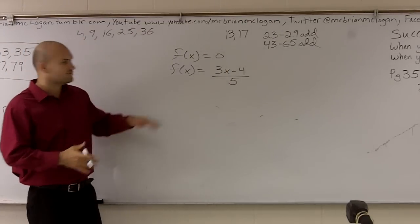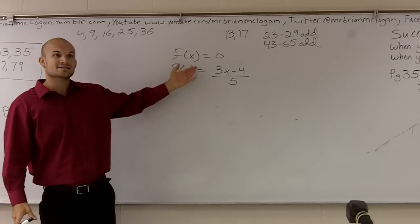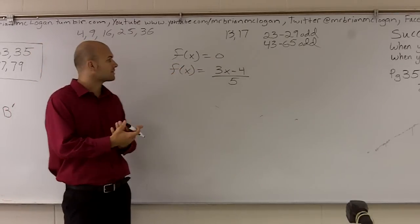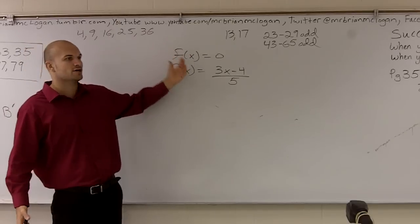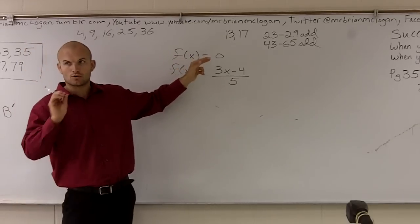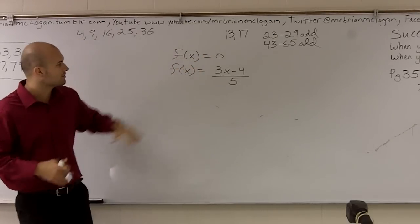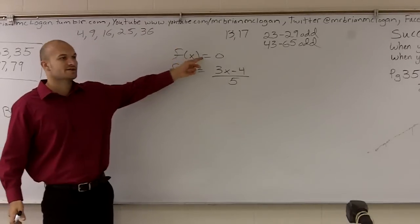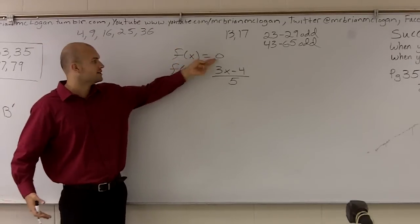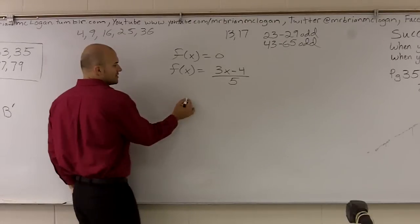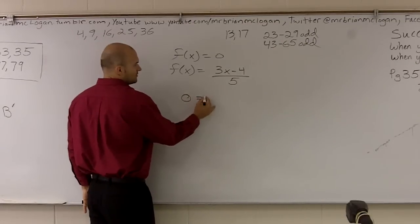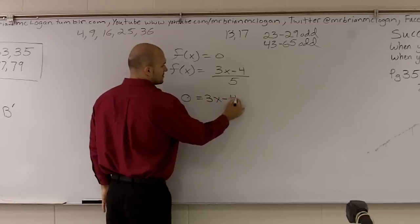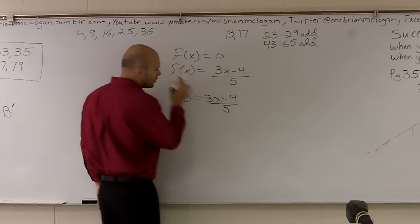Previously, we've learned to find the value of the function when x equals 0. Now what we're going to do is find the value of x when f(x) equals 0. So if f(x) equals 0, I'm going to substitute in 0 for f(x). I'm going to rewrite the equation and write 0 equals 3x minus 4 over 5.